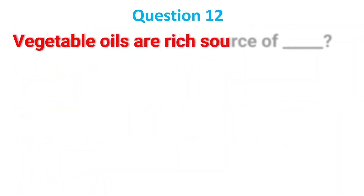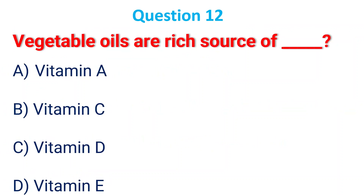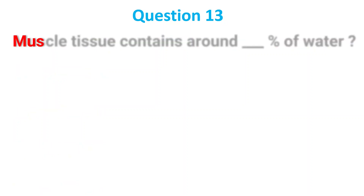Vegetable oils are a rich source of dash. A. Vitamin A; B. Vitamin C; C. Vitamin D; D. Vitamin E. The answer is D, Vitamin E.